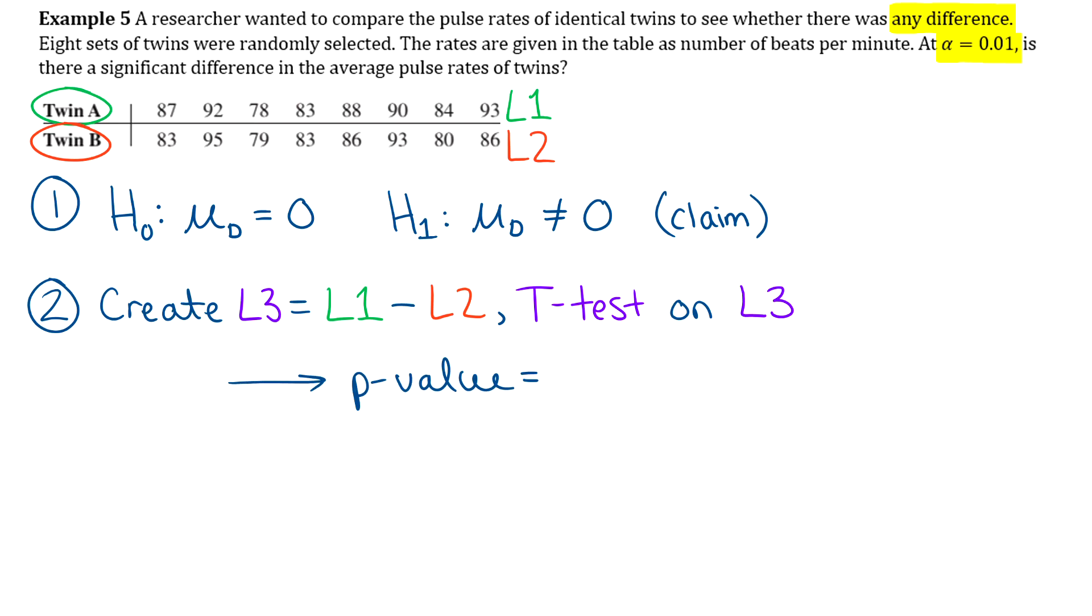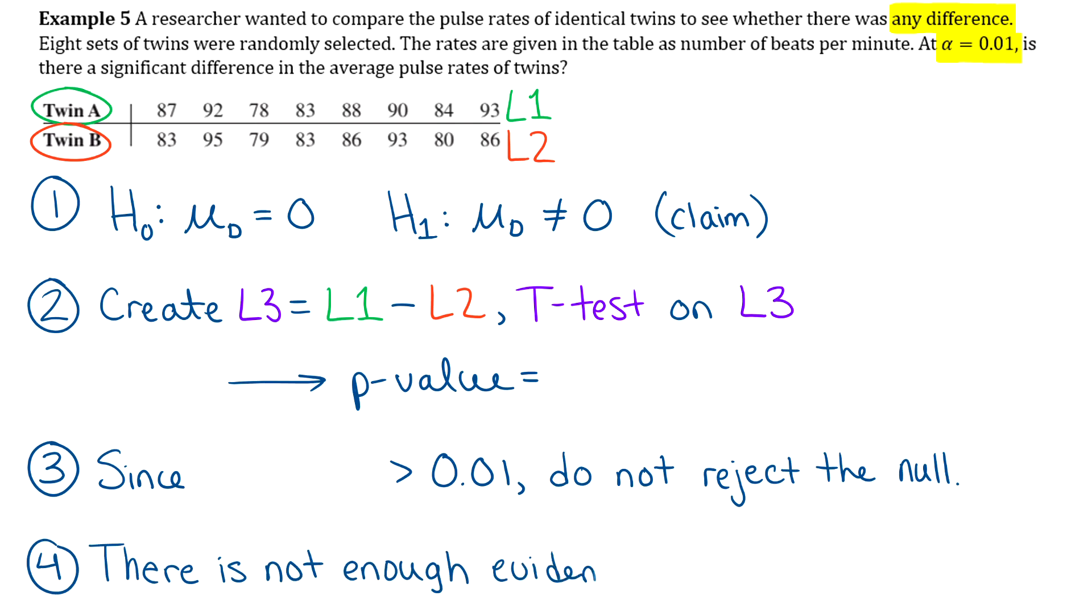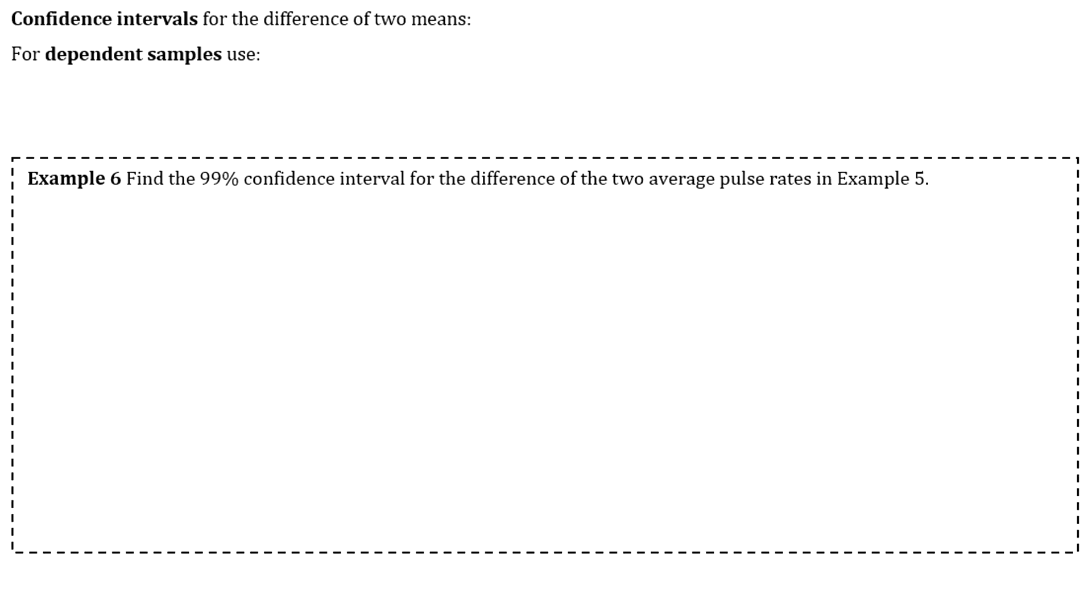Okay, so you're going to get the p-value. And then step three, you will compare that with alpha. So I'll give you a clue. I'm not going to tell you what the p-value is, but I will tell you that it should come out to be greater than alpha. So whatever that value is, it's definitely greater than 0.01. So you do not reject the null. And then step four, we'll say there's not enough evidence to support the claim.